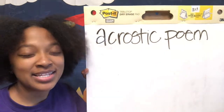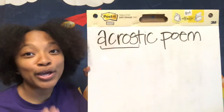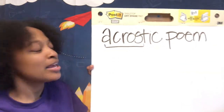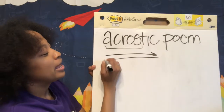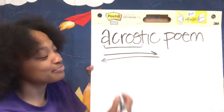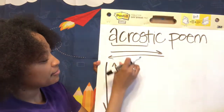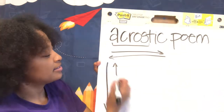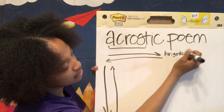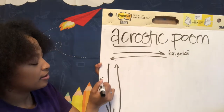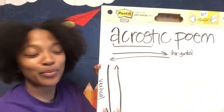One way to remember this style of poetry is that it has the word 'across' in it — like you're going across the street or across the paper. Typically when we think of across we think of going left or right. But for an acrostic poem we're actually gonna be going up and down. Our words are gonna be written vertically — this would be horizontal and this would be vertical.